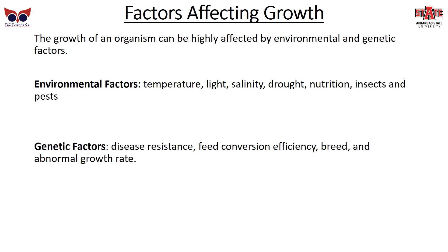There are several factors affecting the growth of an organism: environmental and genetic factors. Environmental factors are things that surround the organism — temperature, light, salinity for aquatic animals, drought, nutrition, insects, and pests. These are all external factors that affect how well something grows. Genetic factors are internal — things that could be a problem even in the best environment — such as disease resistance, feed conversion efficiency, breeding, and abnormal growth rate. These are genetic and not particularly affected by environmental factors.